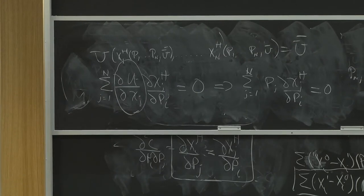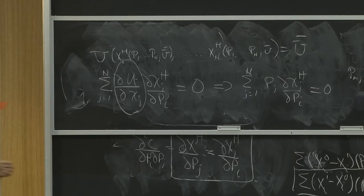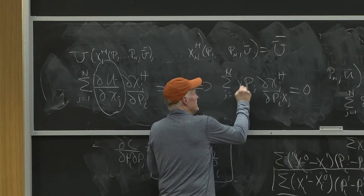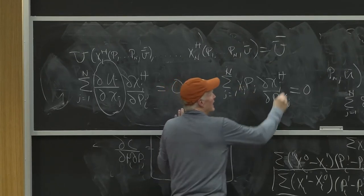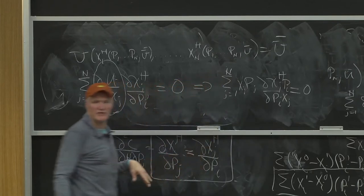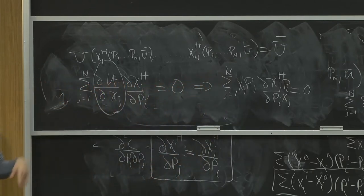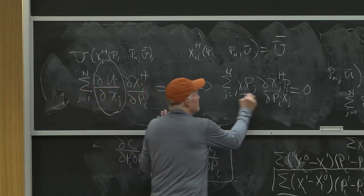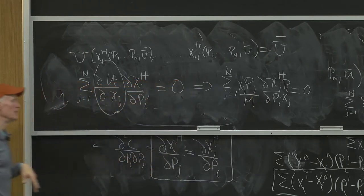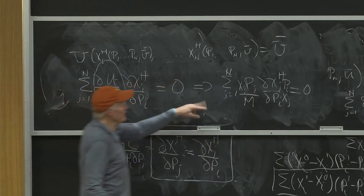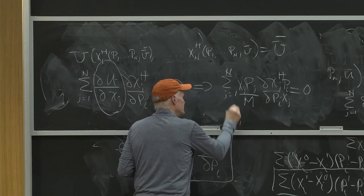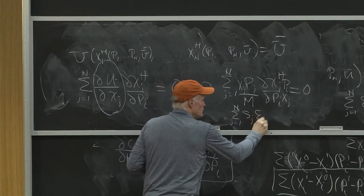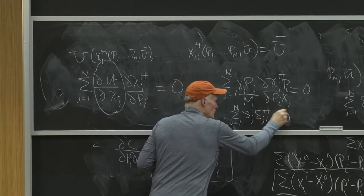Now, how do I make that into an elasticity? Well, I need an xj here. I better put an xj here. I need a pi. I can just throw that up there because that's the same for every term. I multiply the other side by pi. And 0 times pi is still 0. And then I can divide by m just to make my life fun. And once I've done that, this says the sum from j equals 1 to n of the share of good j, epsilon jih, is also equal to 0.